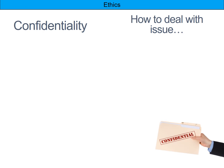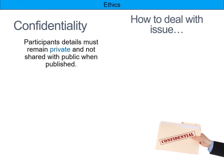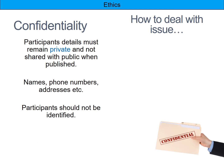Third, confidentiality. Participants' details must remain private and not be shared with the public when research is published — this means names, phone numbers, and addresses. Participants shouldn't be identified. However, this comes up every year: students say the results need to be confidential, but you can't keep results confidential because otherwise you'd have nothing to publish. You can publish the results, but you don't link them to John Smith at 492 High Street — names, phone numbers, and addresses must be removed.